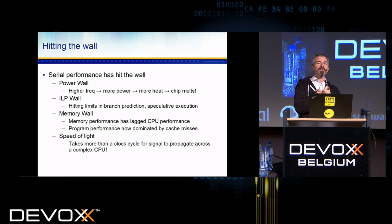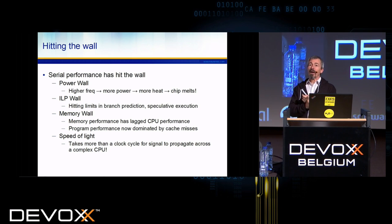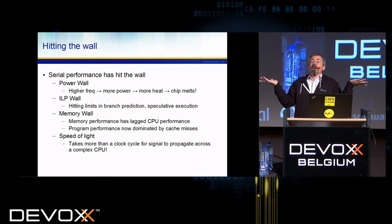The power wall: power goes up to the cube of frequency. So if you raise your frequency a little bit, your power raises by a lot. If you get more power into the chip, you've got to get it out or eventually the chip just melts — it gets hotter and hotter and hotter.